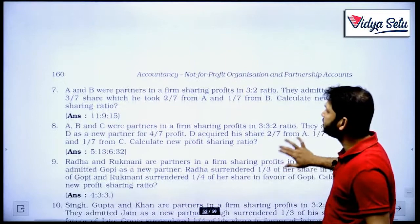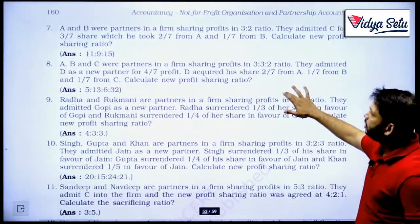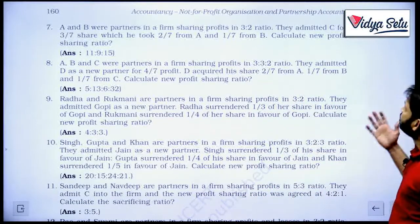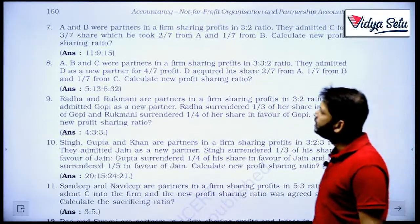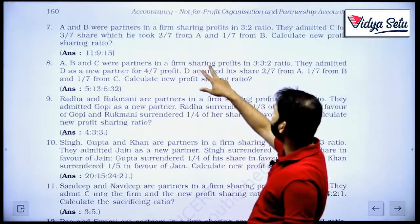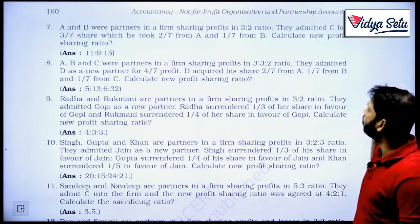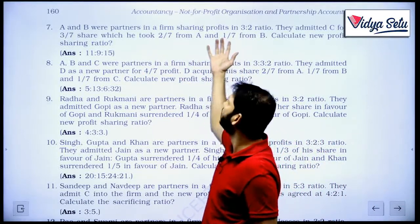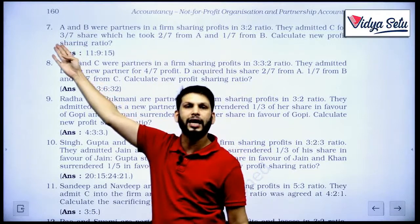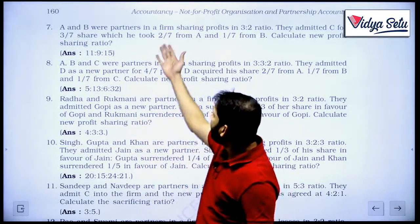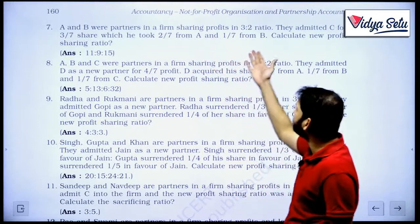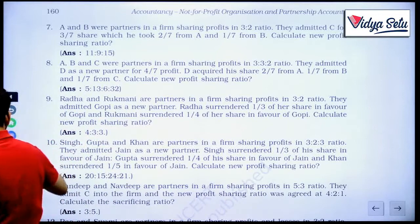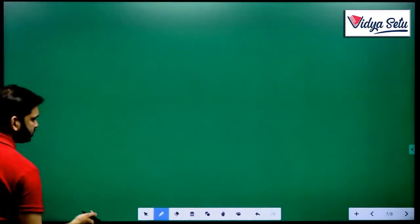So question number 7 is, A and B were partners in a firm sharing profits in the ratio of 3 to 2. They admitted C for 3/7 share, which he took 2/7 from A and 1/7 from B. So in this type of question, just do the mental calculation. 2/7 plus 1/7, 3/7 is its exact share. So we do not have to multiply, we just have to subtract from A and B, 2/7 and 1/7 and we will have our answer. They have already done that. So we have to be a bit vigilant in these type of questions.